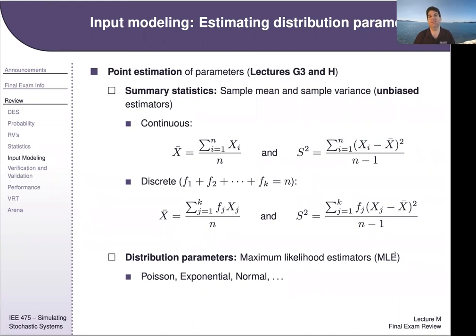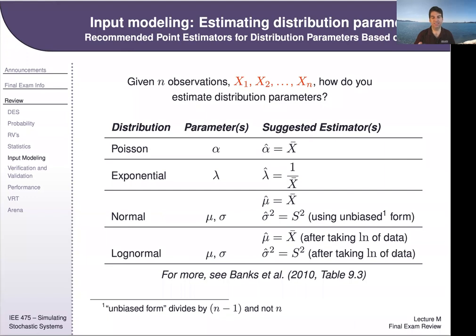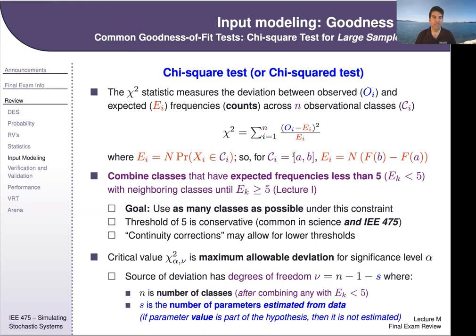Know your summary statistics: the formula for sample variance uses n minus 1 in the denominator, not n. Try to recall your maximum likelihood estimators and their purpose — given a PDF and data, the MLE finds the optimal parameter values for that distribution if you're confident that distribution is the right choice.